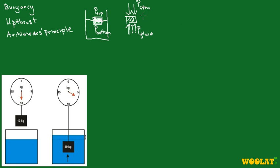So the difference in the pressure between the top and the bottom will give rise to your upthrust. After all, pressure equals force per unit area, so force equals pressure multiplied by surface area. The force experienced at the bottom of the object is larger than the force at the top, and this gives rise to upthrust.